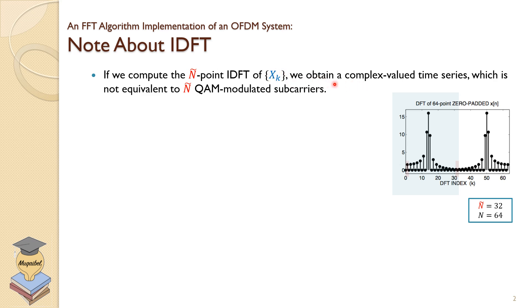I really want a time signal which is going to be transmitted. This complex-valued time signal will not be equivalent to the N-tilde QAM-modulated subcarriers. So what do we do? How do we get real signals?